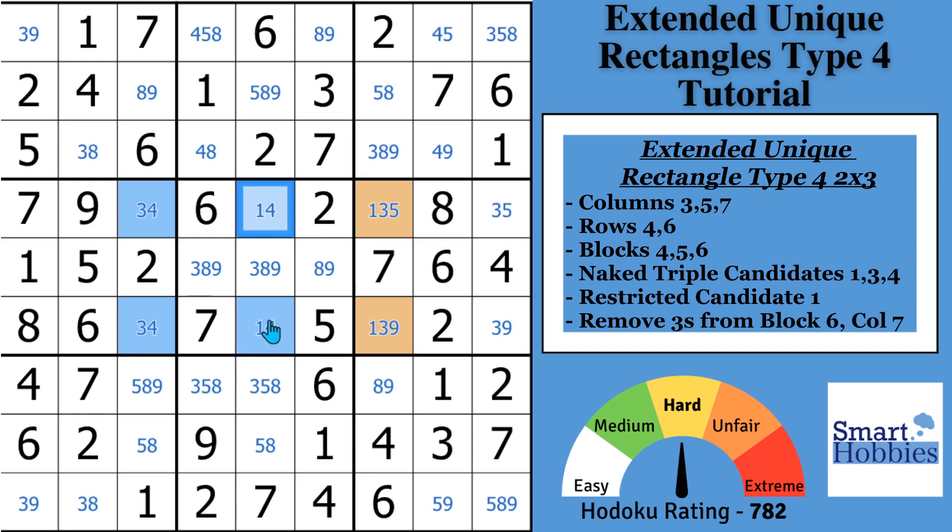And so what we're doing here is you're going to focus on these two orange cells. And you're going to ask the question, what if this cell was a 3, right? It's part of that naked triple, 1-3-4. What if it's a 3? If this is a 3, you force this cell to be a 1 because that's the only other place a 1 could be in block 6, which puts a 1 here, 4 there, 3 here, and a 4 there.